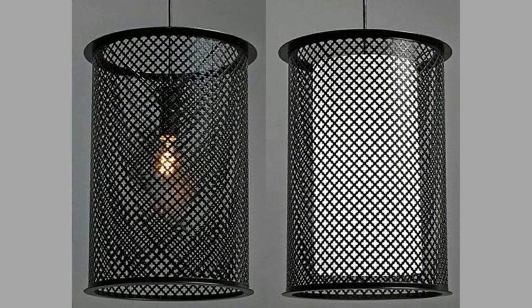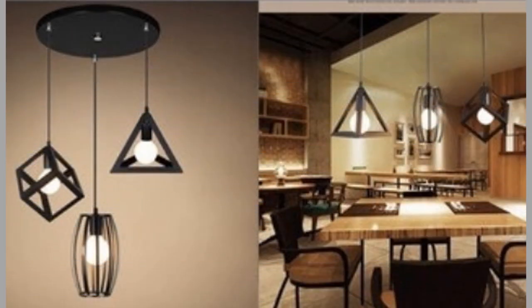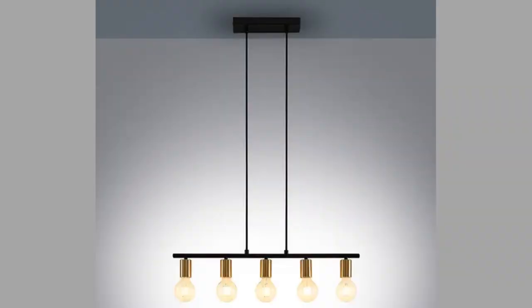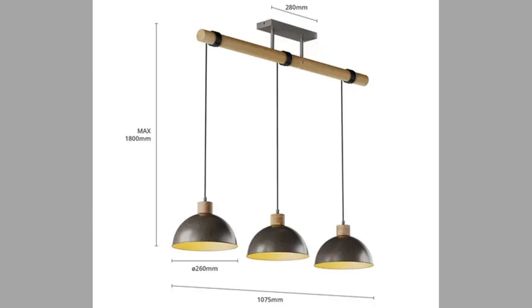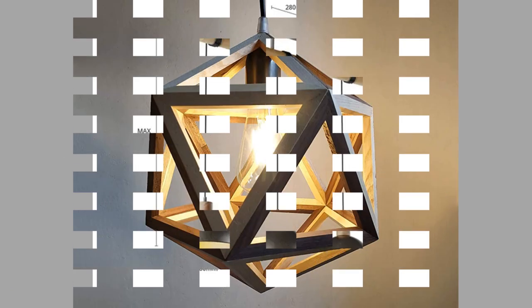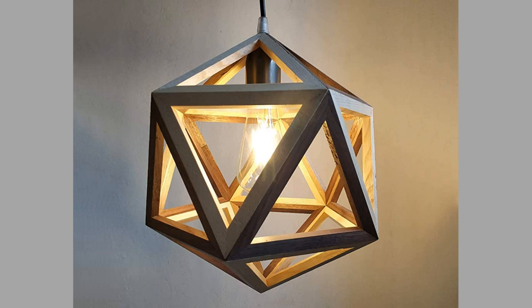A pendant light, sometimes called a drop or suspender, is a lone light fixture that hangs from the ceiling, usually suspended by a cord, chain, or metal rod. Pendant lights are often used in multiples, hanging in a straight line over kitchen countertops and dinner sets, or sometimes in bathrooms.